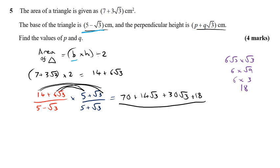And then on my denominator, five times five is 25, five times root three, five root three, negative root three times five, negative five root three, and root three times root three is just three.